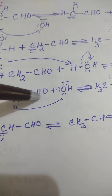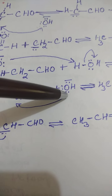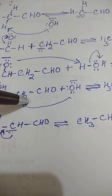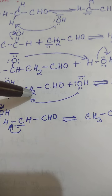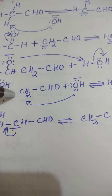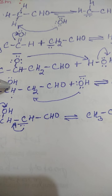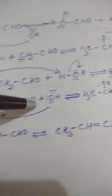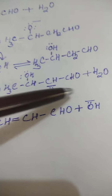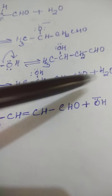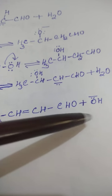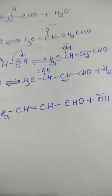This aldol can further undergo reaction with the base hydroxide, where alpha-beta elimination occurs: the alpha hydrogen leaves along with the electron pair, and OH negative leaves from the beta carbon, leading to the formation of an unsaturated carbonyl compound. The base is regenerated.